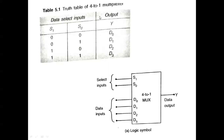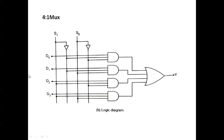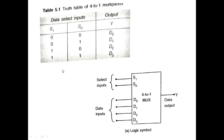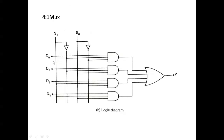The truth table for the multiplexer shows select combinations 00, 01, 10, 11 mapping to outputs D0, D1, D2, D3. This is the logic symbol showing data inputs and select lines going to one output. For the 4-to-1 MUX logic diagram, when select is 00, the path through the inverter is connected, and inputs are connected to D0, D1, D2, D3.